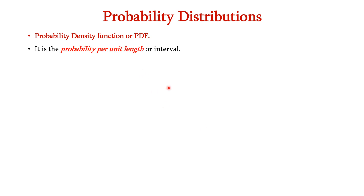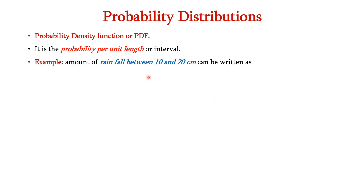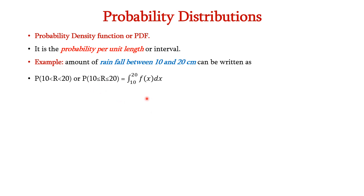Next, the probability density function or PDF. It is the probability per unit length or interval. For example, consider the amount of rainfall between 10 and 20 centimeters, which can be expressed as P(10 < R < 20), where R is the rainfall amount. We can represent this in PDF form as the integral from 10 to 20 of f(x) dx. In general, we can represent it as the integral from a to b of f(x) dx, where a and b are the interval endpoints.